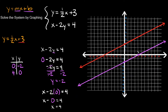As you can see from the graph, we have two parallel lines. These two lines will never touch at any point on the coordinate system. That means there's no point on the graph that satisfies both equations, so this system has no solution.